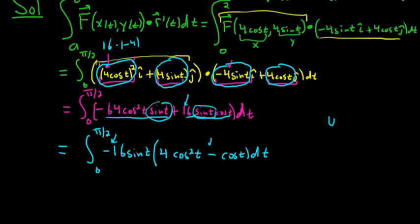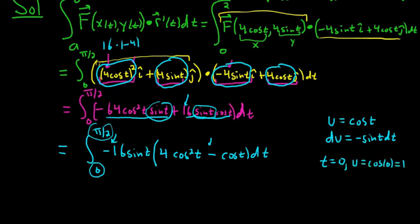So now we can let u be cosine t. So that du is negative sine t dt. That worked out really nice. And now we also have to change the limits of integration. So when t is equal to 0, u is equal to the cosine of 0, and cosine of 0 is 1. And then when t is equal to pi over 2, u is equal to the cosine of pi over 2, and the cosine of pi over 2 is 0.